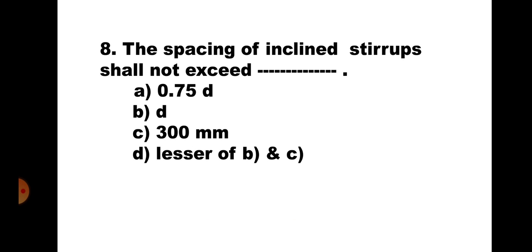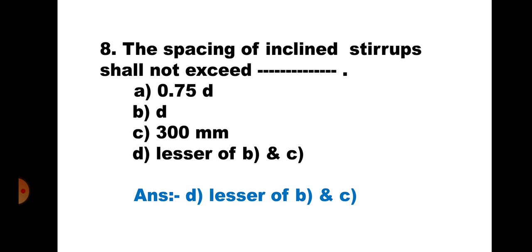Question 8. The spacing of inclined stirrups shall not exceed: A. 0.75D, B. D, C. 300 mm, and D. Lesser of B and C. This is similar to the previous question on vertical stirrups. As the stirrups are inclined, their spacing shall not exceed D or 300 mm, whichever is less. Hence, the correct answer is D. Lesser of B and C.